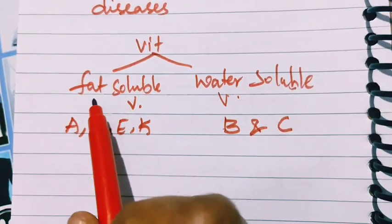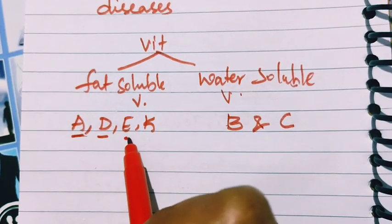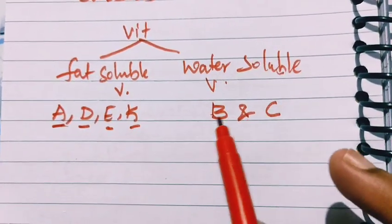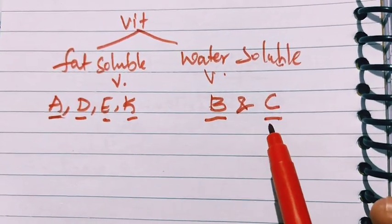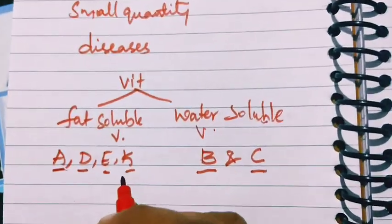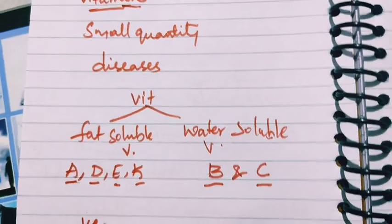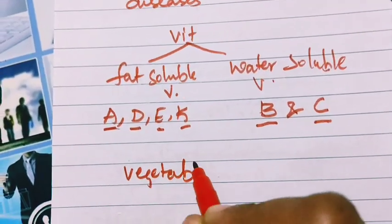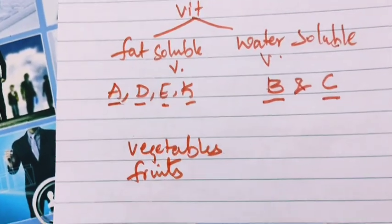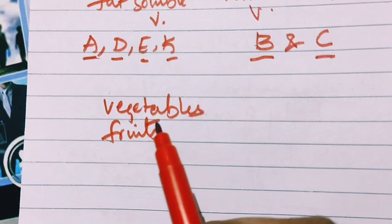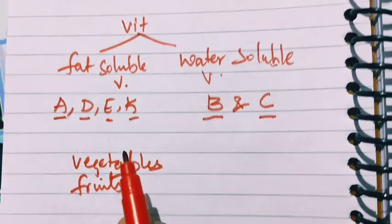Vitamins are of two types: fat-soluble vitamins are vitamin A, D, E, and K, and water-soluble vitamins are vitamin B and vitamin C. These vitamins are obtained from different types of vegetables and fruits — leafy vegetables and other vegetables — when we eat them.